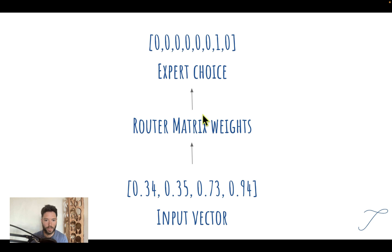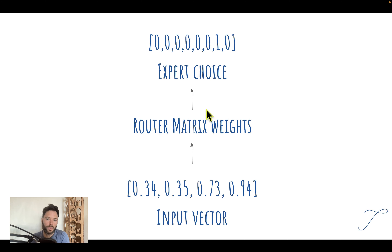As an example, if you have an input vector — let's say the token 'hello' — that will be represented in vector form. Here I've got a four-dimension vector, and this vector will be passed into the router. The router itself is like a small neural net — a matrix of weights that is going to predict which expert it should send it to. It outputs an expert choice, for example expert seven. What the router actually does is predict a probability of each expert being chosen, and then the most likely expert is the one to which the inputs are fed.